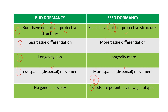If we look at the fifth point: in the case of buds, there is no genetic novelty. In the case of seeds, there are potentially new genotypes. Seeds contain embryos, and embryos are formed from zygotes, and zygotes are formed from gametes — male gametes and female gametes. So definitely seeds are made new every time.